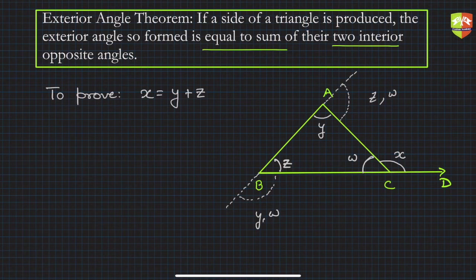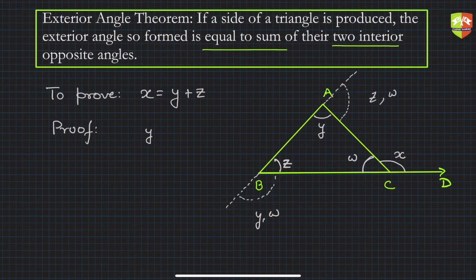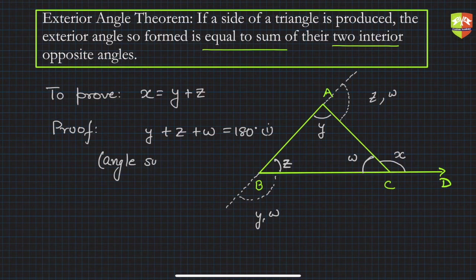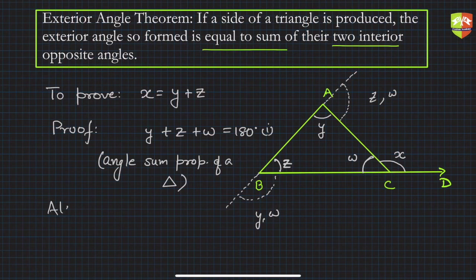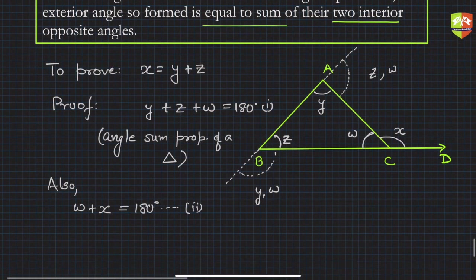We know there is a triangle with angles involved, so the angle sum property will be used. We can write: y plus z plus w equals 180 degrees — this is equation 1, because of the angle sum property of a triangle. Also, w plus x equals 180 degrees — this is equation 2, since w and x are supplementary angles on a straight line.